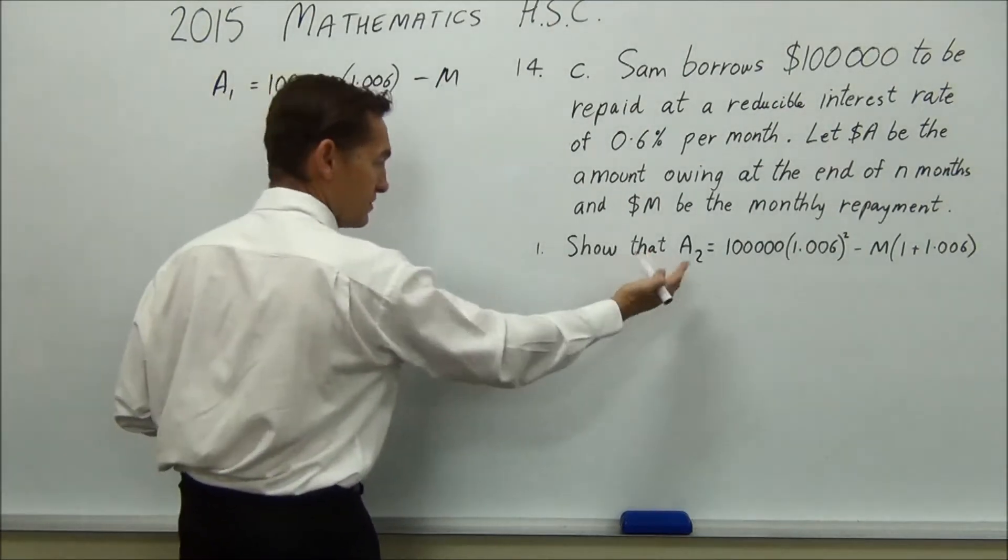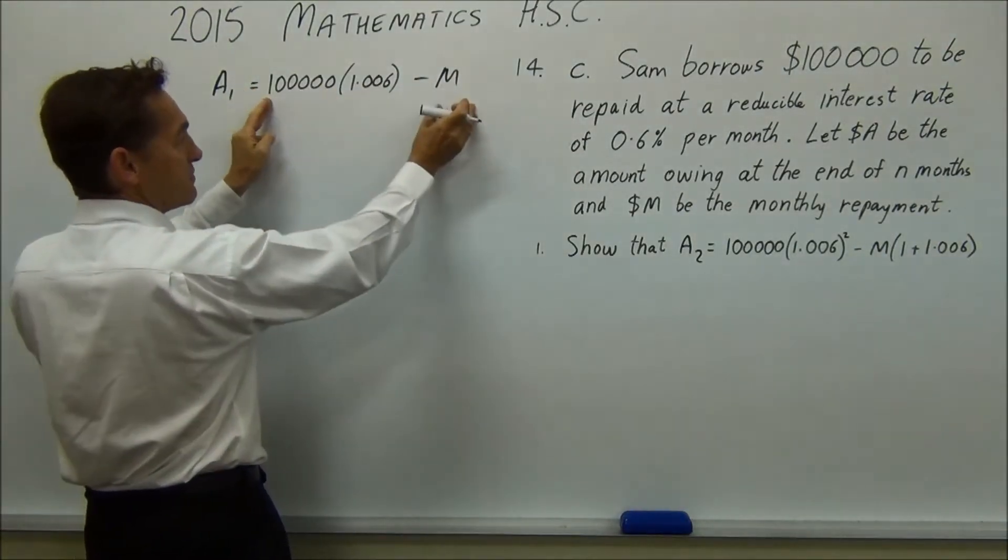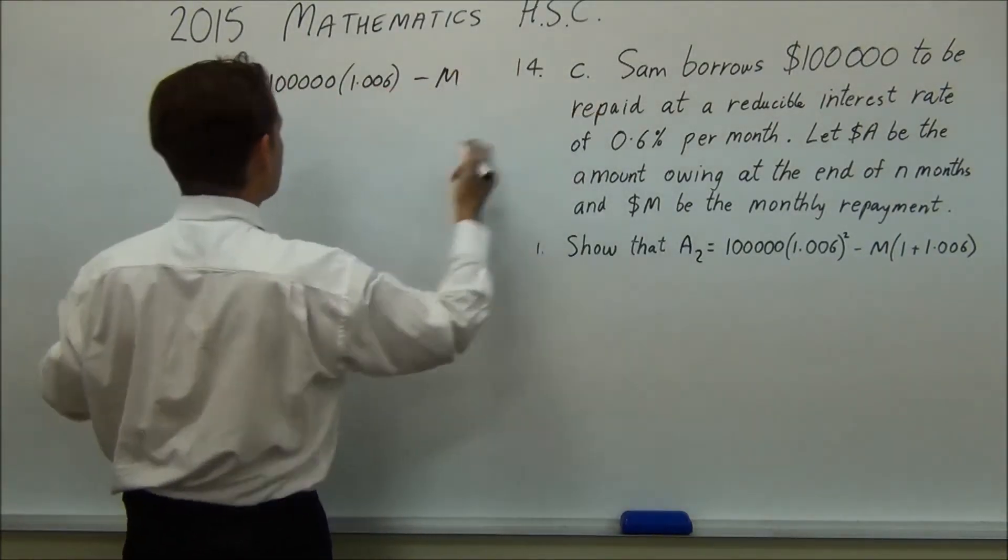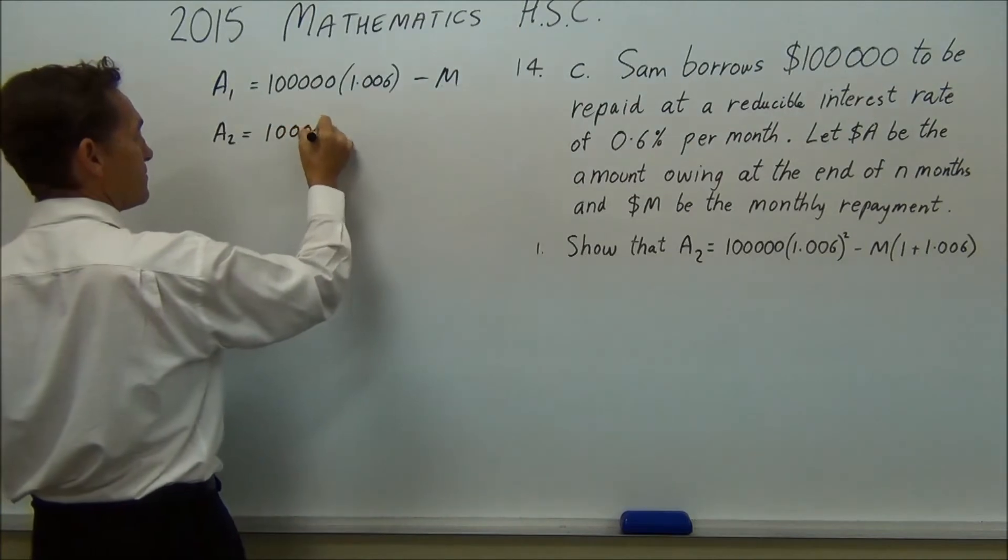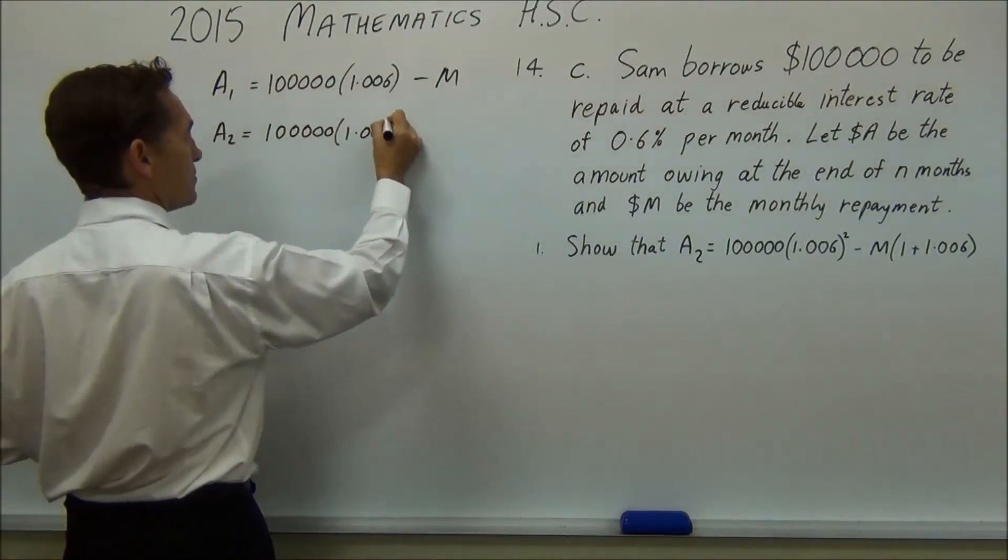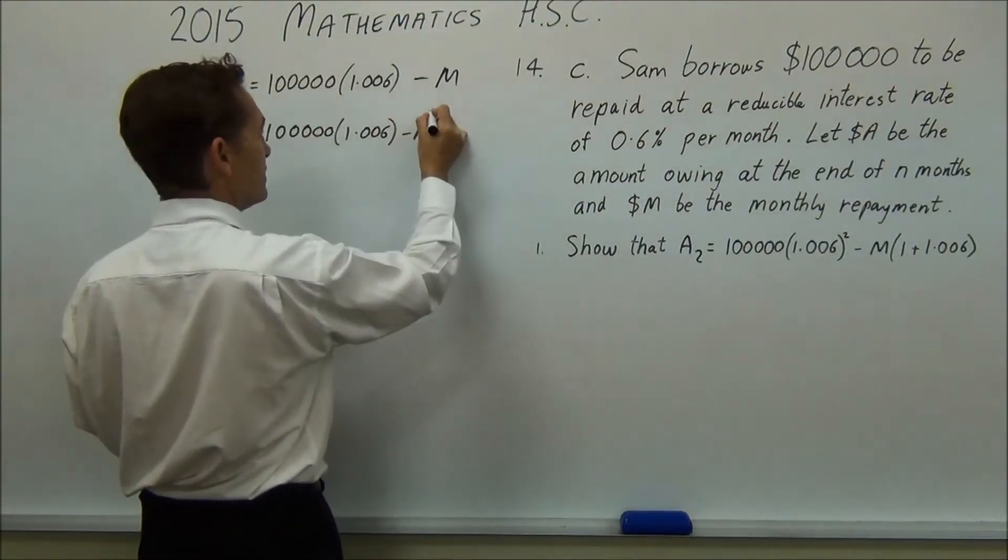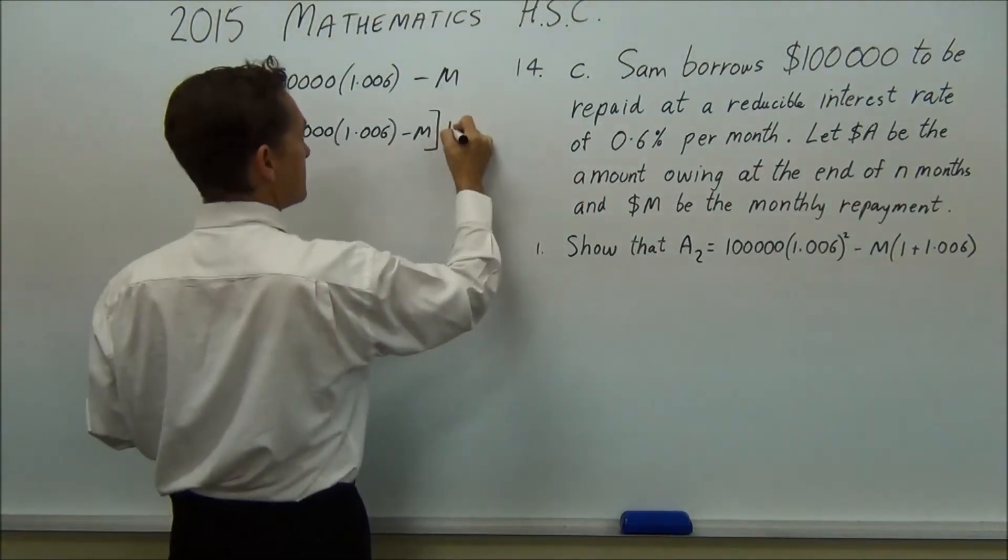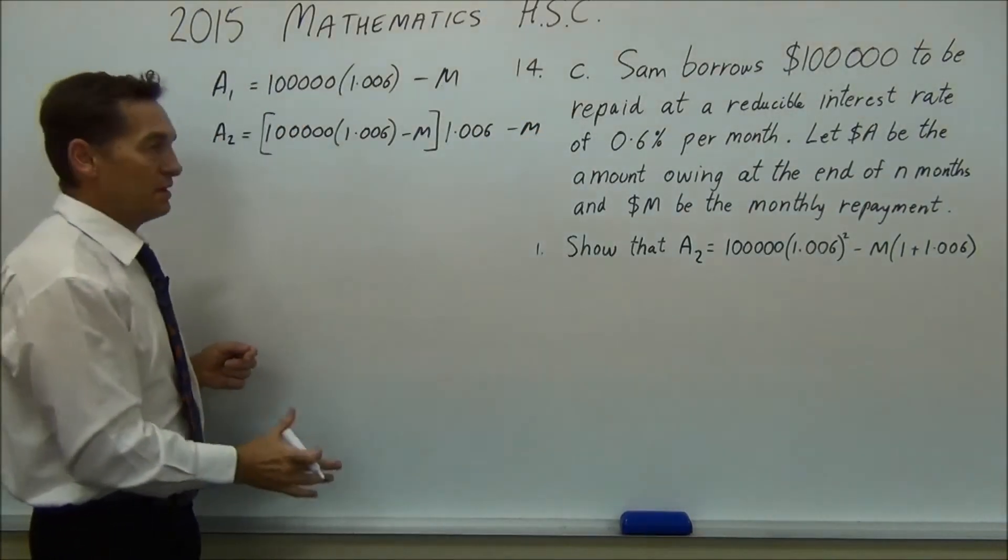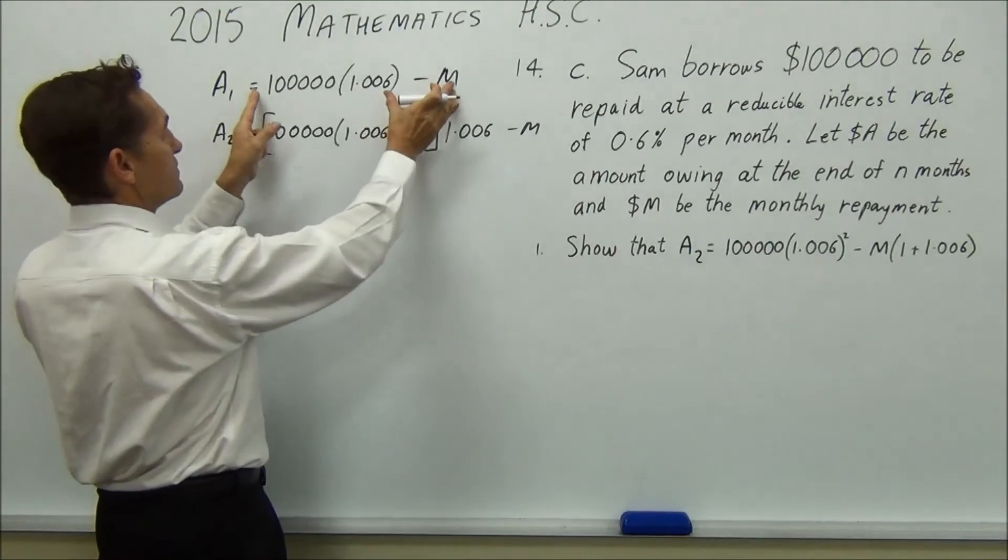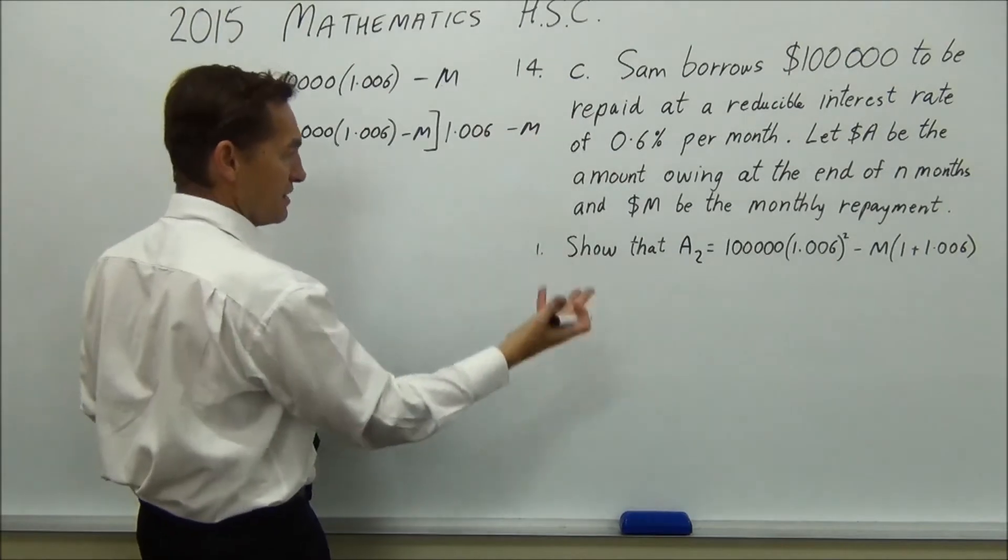At the end of the second month, what happens? Well, you start with this, and then the same thing happens. So instead of starting with this and taking off a repayment, you're going to start with this and take off repayment. So you just write it straight underneath, the same amount. So that, this effectively, is that number. So then you've got that multiplied by 1.006 minus M. And the examiners want to see that. They want to see that you've figured out that, okay, that becomes my new amount. Times it by that, take away another repayment.